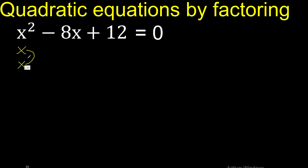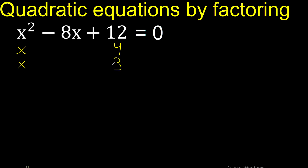Because x multiplied by x is x squared. We need 2 numbers that multiply to 12 — 4 multiplied by 3 is 12, or 6 multiplied by 2 is 12.